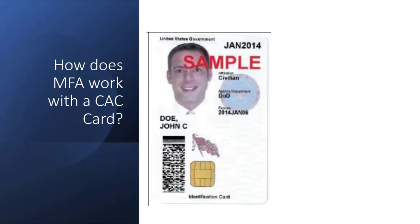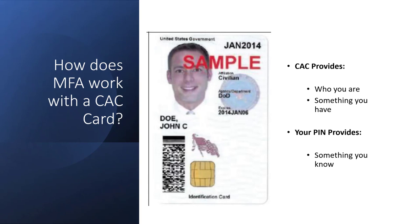How does it work with a common access card? Here we have a sample common access card from the United States government. The CAC card provides who you are and something you have. But your PIN — the number that you have to provide when you log in with a common access card — provides something you know. So here we have the three things to protect us: who you are, something that you and only you have, and your PIN provides something you know.